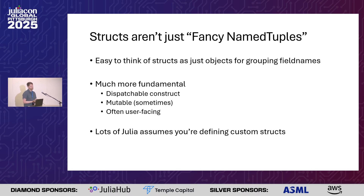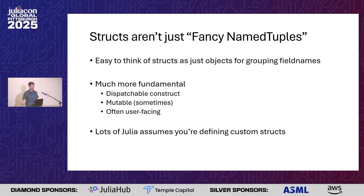When I was starting out, it's easy to think about structs as sort of fancy named tuples because we're able to stuff data into these named containers and access data using the dot syntax. Moving forward, you start to understand that structs are a lot more fundamental to the language. They're the core of dispatch within Julia, how we get access to mutation in different objects, and if you're building a framework for other people, those abstractions usually take the form of different kinds of structs.